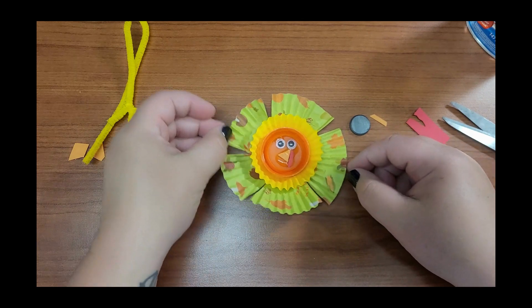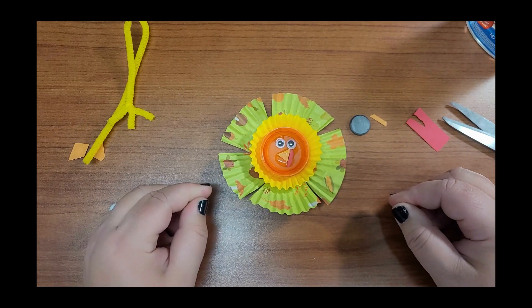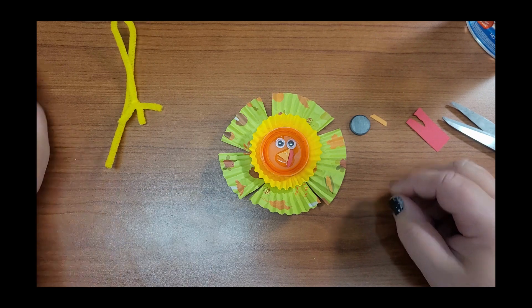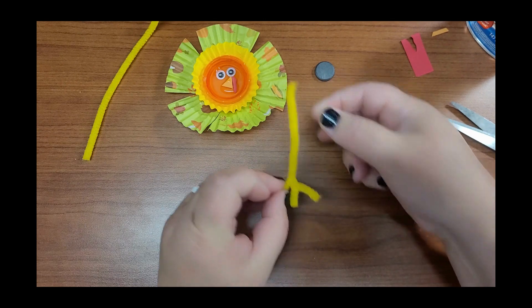And glue the small cupcake liner into the large one. All right, so we have one more step, two more steps actually because we have a magnet. But our next step is to make our turkey's legs. You see I've already made one of his legs, so we're going to make another one.